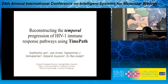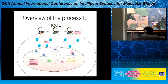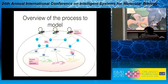I'm going to be talking about reconstructing temporal progression of HIV immune response pathways using a new tool that we developed called TimePath. This is the overview of the process that we want to model. The blobs in gray are the HIV-1 viruses. The viral proteins of HIV-1 interact with the host protein inside a human cell, causing further interactions and a signaling cascade that downstream activates transcription factors, causing changes in expression. Based on observing the time series gene expression, we want to be able to infer the signaling pathways.